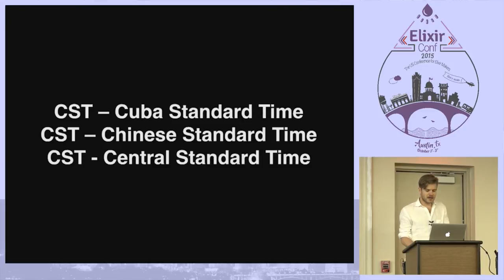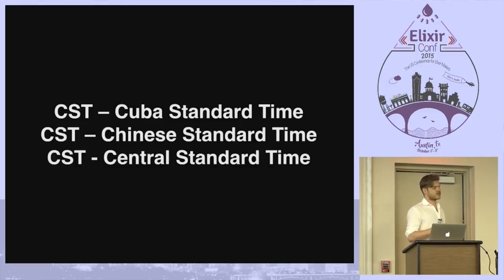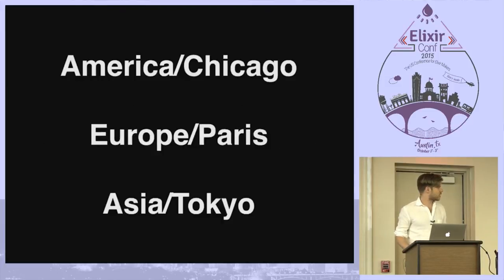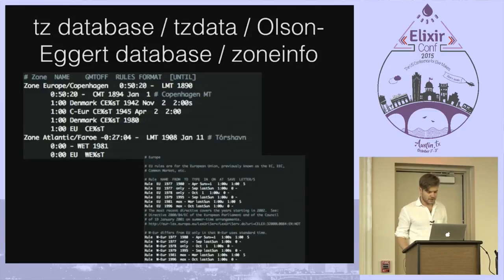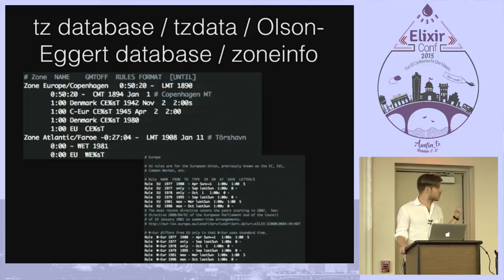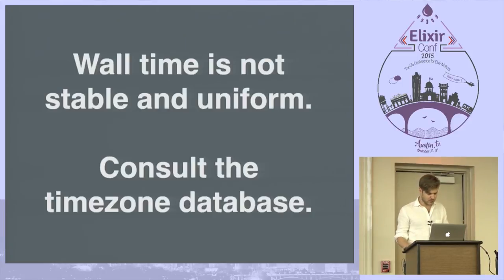Instead, use proper identifiers like those from the Olson database, now managed by IANA.org — they also manage DNS for the internet, so it's kind of an open source effort. Anytime you want to do something with time zones or daylight saving time, you want to consult this database, because they've already done all this work and it's just there for you. What to remember: wall time is not stable and uniform, and you want to consult the time zone database.